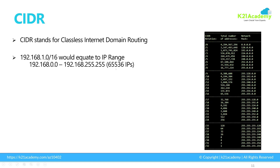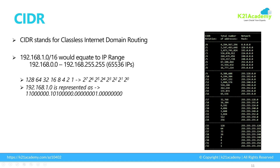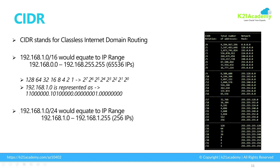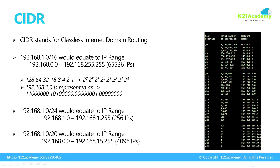So in a /16 CIDR block, you can have up to 65,536 machines or IPs, where 192.168 is the static part across all four octets (IPv4). Similarly, when we say /24, that means the first three octets are static — 8 plus 8 plus 8 equals 24. Only the last octet changes. The number of IPs is 32 minus 24 equals 8, and 2 to the power of 8 is 256. So in a /24 CIDR range, you can have up to 256 IPs. You can also Google or use a CIDR table to find the starting IP, ending IP, and total IPs for any CIDR range.